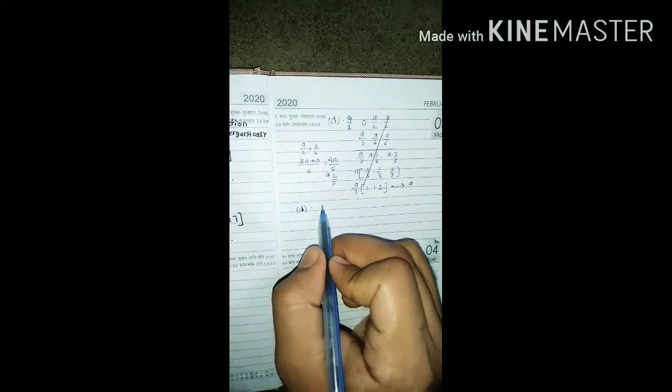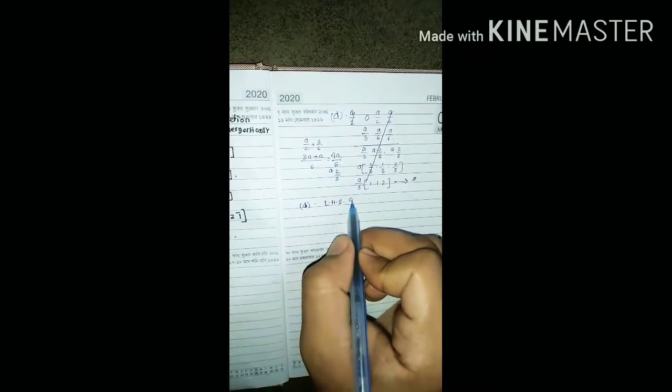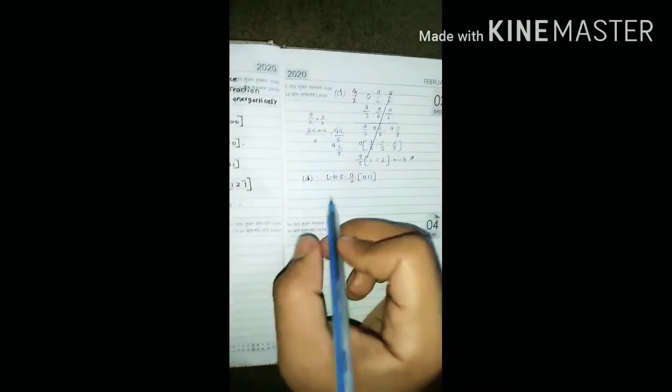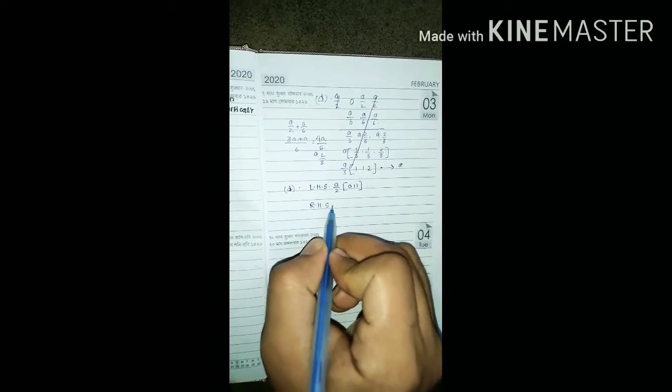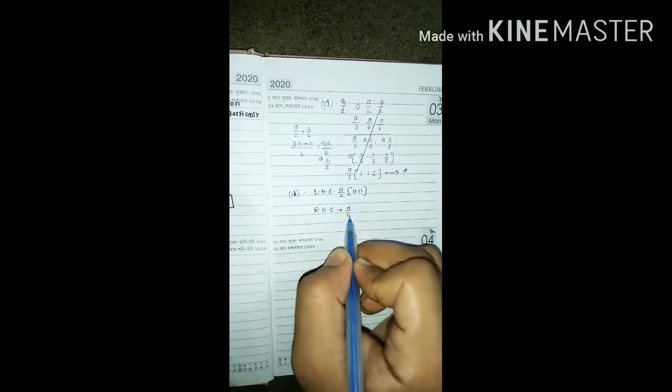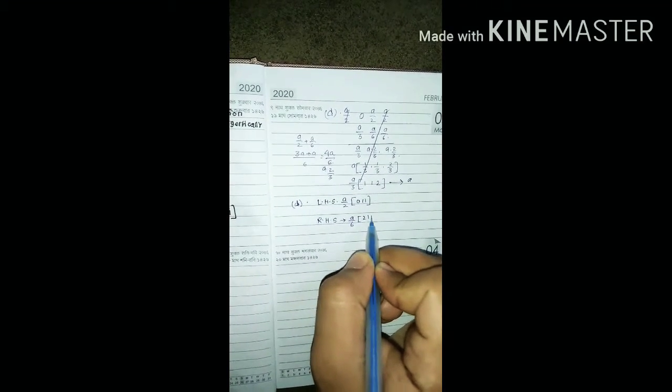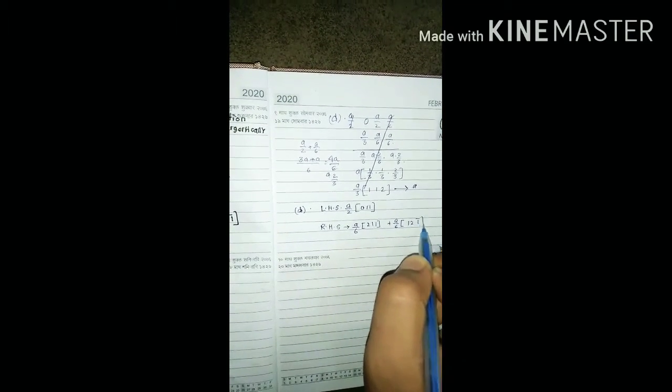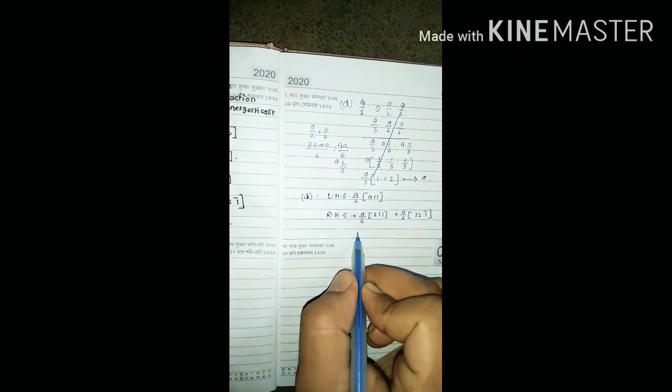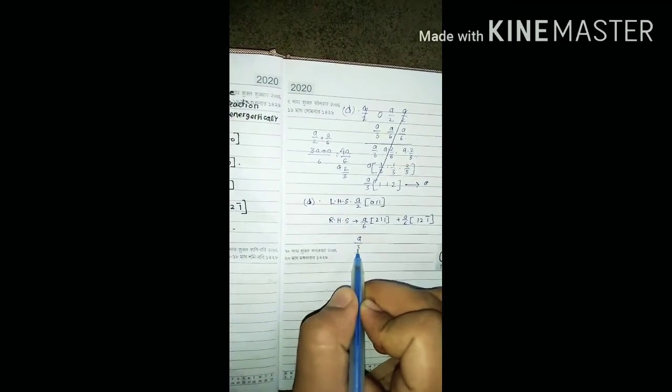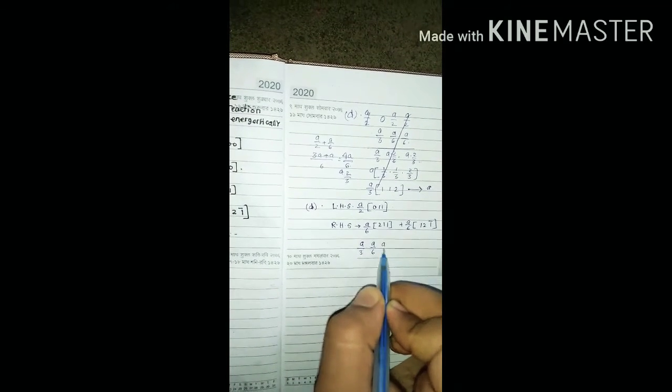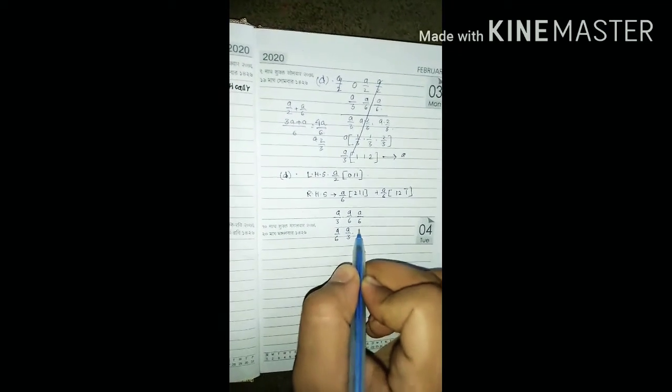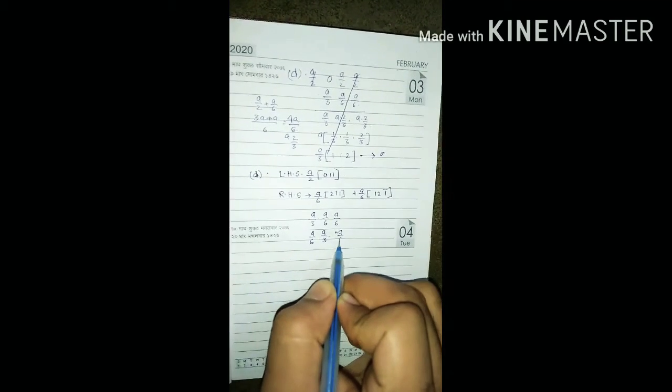In left hand side it is written over here that a by 2, 0, 1, 1, so we are not going to touch it. Taking right hand side, we are going to make our conclusion: a by 6, 2, 1, 1 plus a by 6, 1, 2, 1. It is coming a by 3, a by 6, a by 6, and second part it is a by 6, a by 3, and it is minus a by 6.